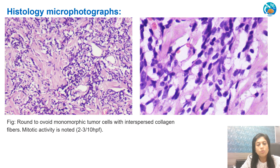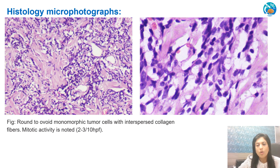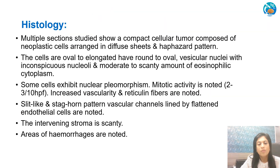Going to the 10x power, we can see that the tumour cells are very monomorphic, round to ovoid, and they are interspersed by collagen bands. The mitotic activity was low, 2 to 3 per high-power field.